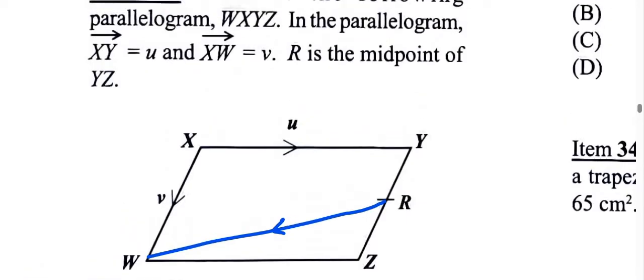Alright, so we want to get from r to w. Now I drew a line from r to w because that's where they want us to actually express RW in terms of u and v.